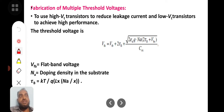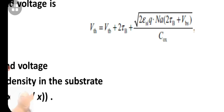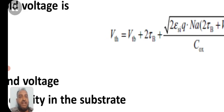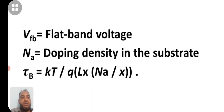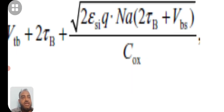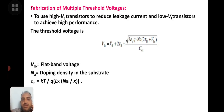Threshold voltage depends upon doping concentration, the thickness of the oxide layer, and many other parameters. The threshold voltage depends upon flat band voltage VFB, doping density or doping concentration NA in the substrate, and COX — oxide capacitance per unit area. All these parameters contribute to the threshold voltage.